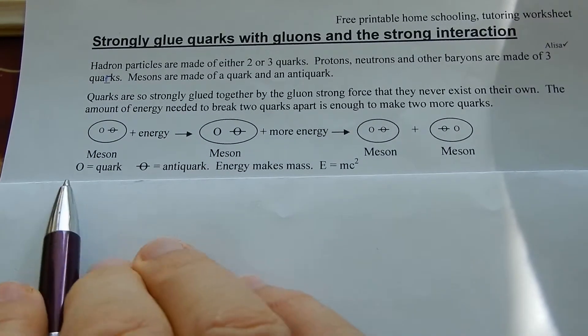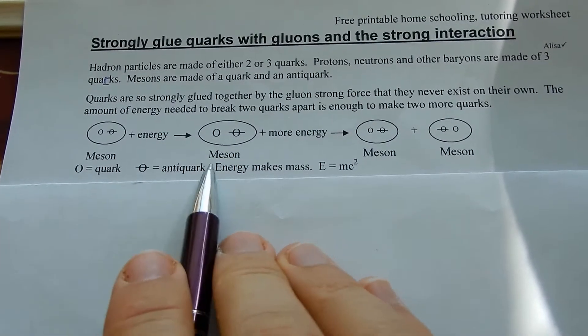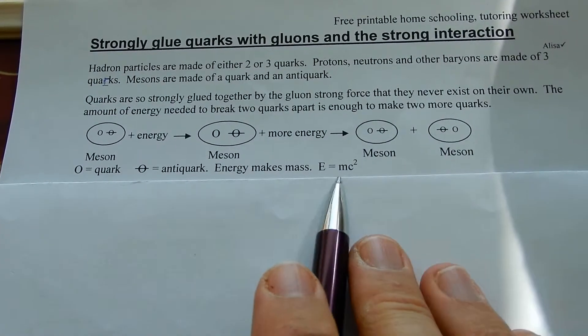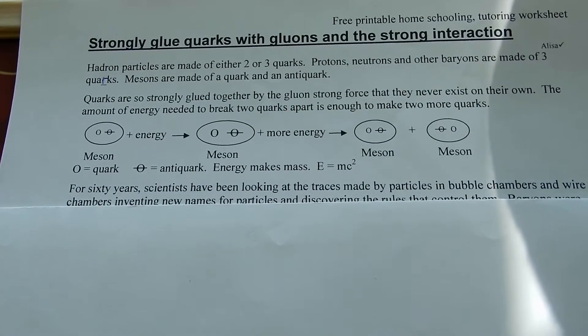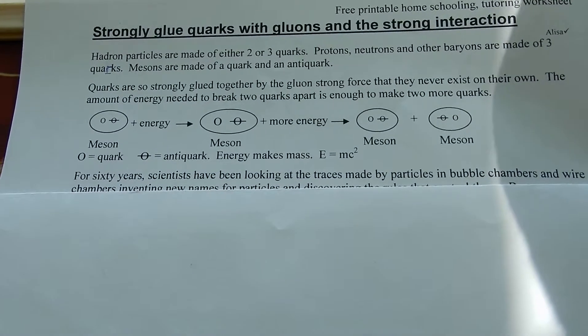That's the quark, that's the anti-quark. Energy makes mass — E equals mc squared. Works in both directions.